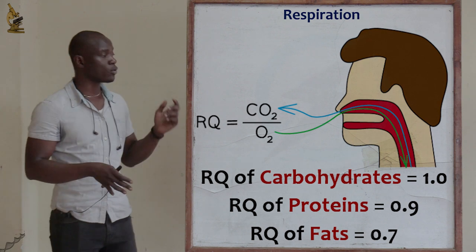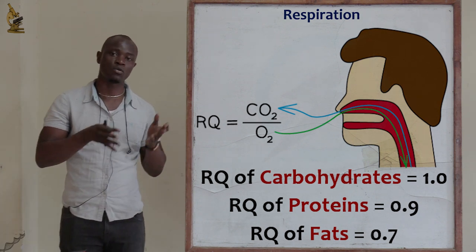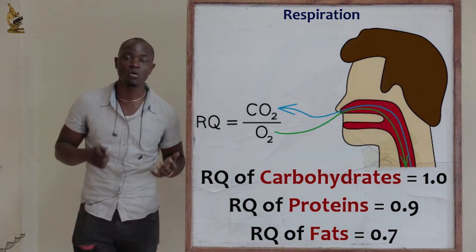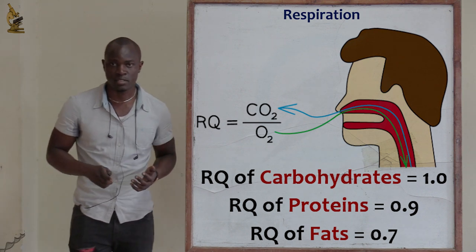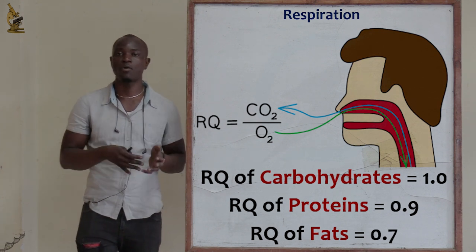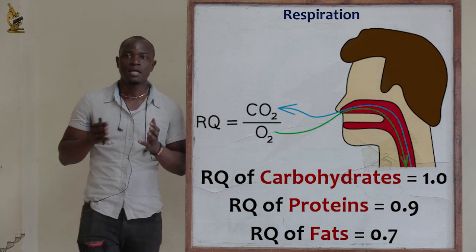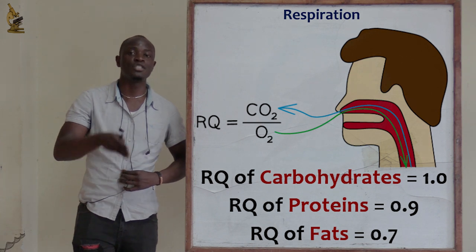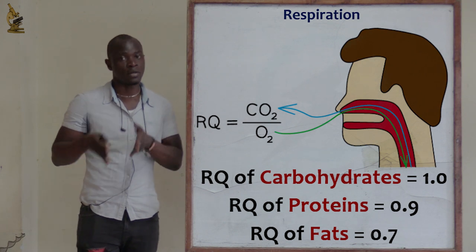The respiratory quotient for fats is always equal to 0.7, while the respiratory quotient for proteins is always equal to 0.9. The RQ of fats and proteins indicate that the carbon dioxide produced is less than the oxygen which is used up. That is why their respiratory quotients are always less than 1.